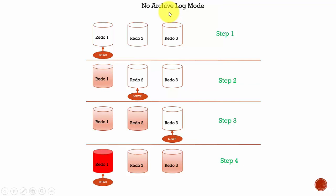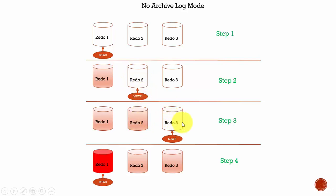Redo data plays a very important role in recovery. We will have multiple redo log files. In step one, the log writer has written the redo. Once that redo log file is full, it goes to the second redo log file. When this redo log file is full, it goes to the third one. When the third redo log file is full, Oracle will go back to the first one and overwrite all the data present in it. That means we are literally losing the redo data.